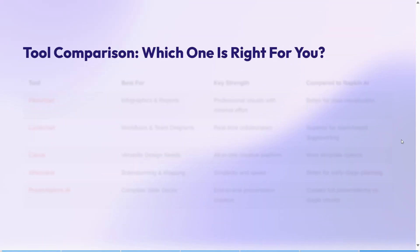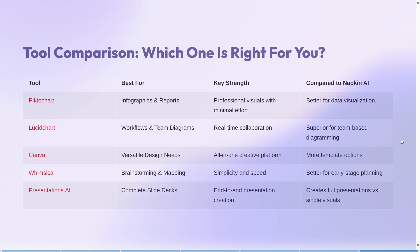If you want to compare them one-to-one to see which one is right for you, here's the comparison map — you can see each tool, what it's best for, its key strengths, and how it compares to napkin AI. That's it — thanks for watching!